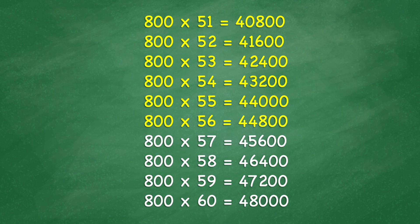800 times 57 equals 45,600. 800 times 58 equals 46,400. 800 times 59 equals 47,200. 800 times 60 equals 48,000.